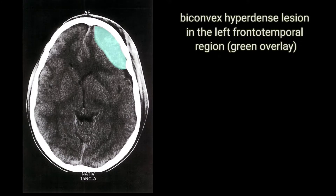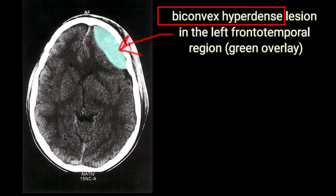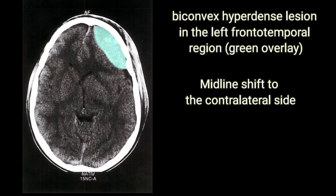In this image, we can see a biconvex hyperdense lesion in the left frontotemporal region, as we can see in the green overlay. We also see the brain hemisphere is shifted to the midline, to the contralateral side of the hemorrhage.